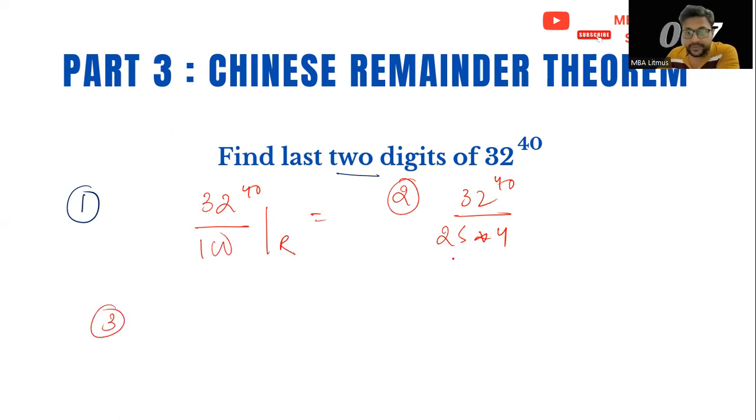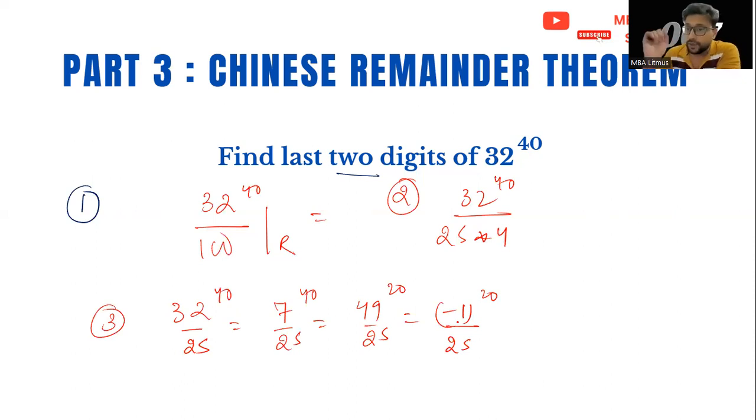Step number three, I have to take individual remainders. So 32 to the power 40 divided by 25 is going to give me a remainder of 7. So 7 to the power 40 divided by 25, I can write this as 49 divided by 25 raised to the power 20. Now, if I divide 49 with 25, it's going to give me minus 1, the concept of negative remainder. I have also done a video summarizing all the key concepts of remainders including negative remainders. Minus 1 to the power 20 becomes equal to 1.